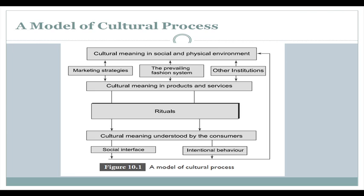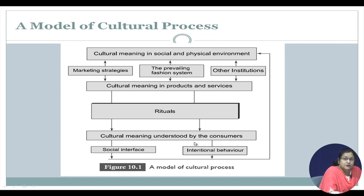Now we talk about a different aspect — the model of cultural process. This model involves around three to four steps and is bidirectional in many places. The major blocks are: cultural meaning in the social and physical environment, cultural meaning in products and services, rituals, and cultural meaning understood by the customer. I will now explain what this model talks about.